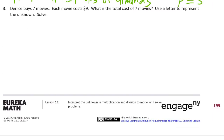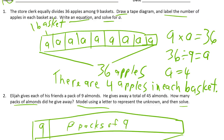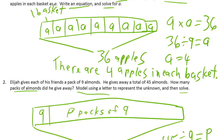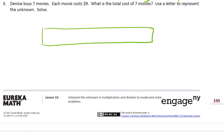Denise buys seven movies. Each movie costs $9. What is the total cost of seven movies? So this is like the three different kinds of tape diagrams we have on this page. The first one, we knew how many parts there were but not what was in each part — we knew the total. This one we knew what went in each pack but not how many parts. And this one we know everything except the product or the whole amount.